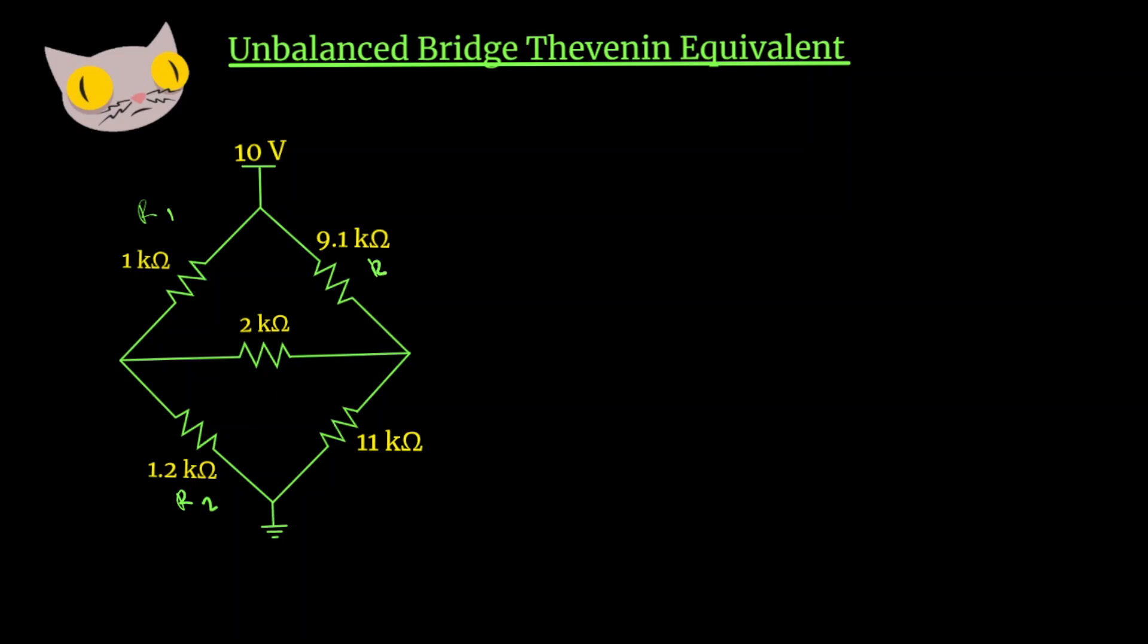R3 is 9.1k ohms, and R4 is 11k ohms, and then R5 will be this middle resistor and that's going to be our detector branch. For this circuit we have two nodes we're looking at: node 1 here and node 2 here.